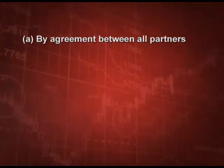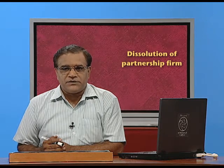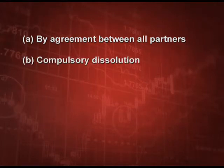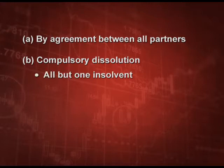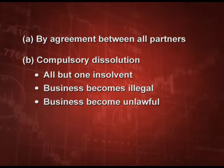Point one: if there is an agreement between all the partners, we can dissolve the firm at any time because it is at the will of the partners. Point two: there are cases where we must compulsorily dissolve the partnership — for example, when all partners except one become insolvent, or when the business becomes illegal.